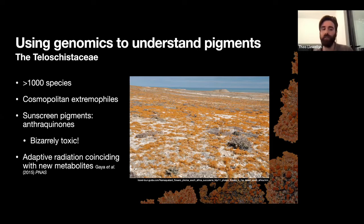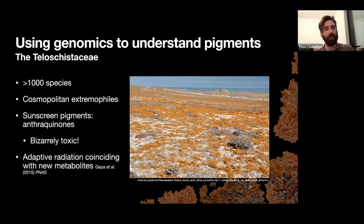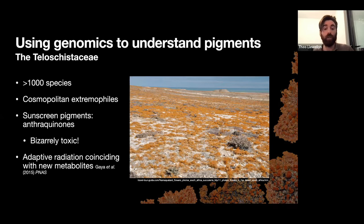The bizarre thing about anthraquinones is that they're actually very toxic and show strong antifungal effects in chemical analyses. So you have a group of fungi producing antifungal compounds but using them as sunscreen — which is very strange. It's not clear exactly why they're using these compounds instead of others like melanin, which is very efficient at protecting from UV damage. Also, work by my supervisor showed that this family underwent a burst in speciation that coincided with the appearance of anthraquinone compounds, suggesting these compounds are very interlinked to the evolutionary success of this clade.